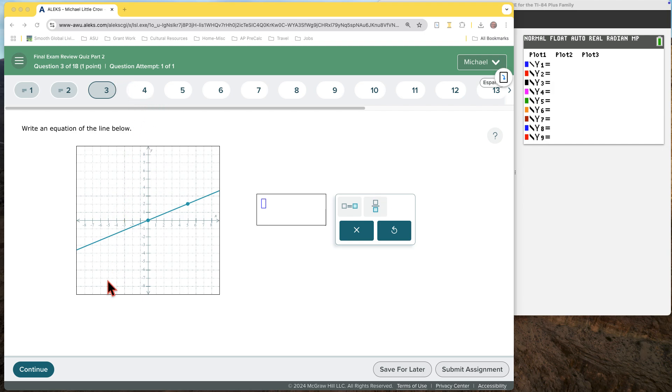For our Mod C Part 2 review is this question. We're given a graph, and we're asked to write an equation of the line. So what is the equation of the line?